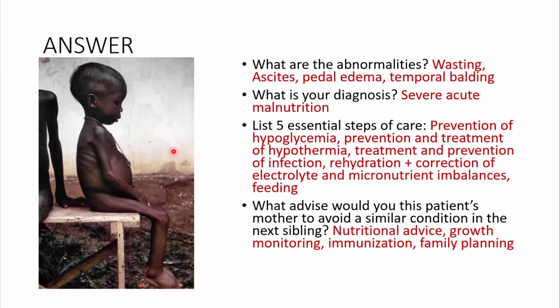The five essential steps of care: treat and prevent hypoglycemia; treat and prevent hypothermia; treat and prevent infections; rehydrate and correct electrolyte imbalances, especially potassium; and give micronutrients such as Vitamin A. Institute feeds gradually — start with initiation feeds, then catch-up feeds.